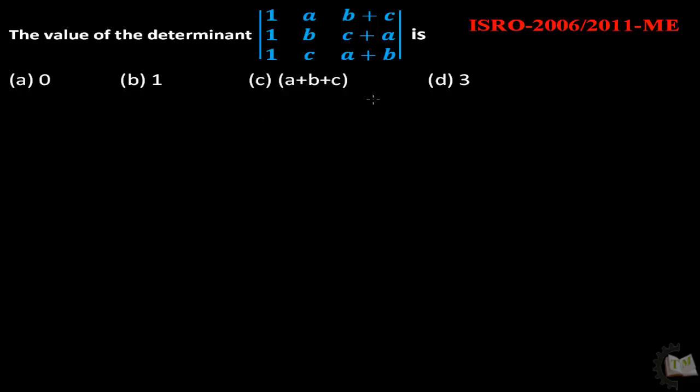How to apply the property of determinant to this question? Observe in first column that is 1, 1, 1, second column that is a, b, c, in third column b plus c, c plus a, a plus b.